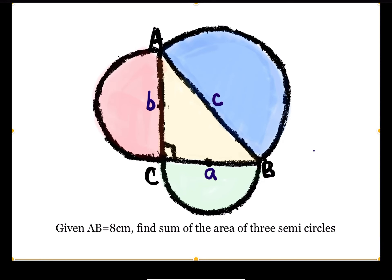Let's look at this question. We're given triangle ABC, a right angle triangle with three semicircles outside the triangle. One of the lengths is 8 centimeters, and we need to find the sum of the area of these three semicircles.